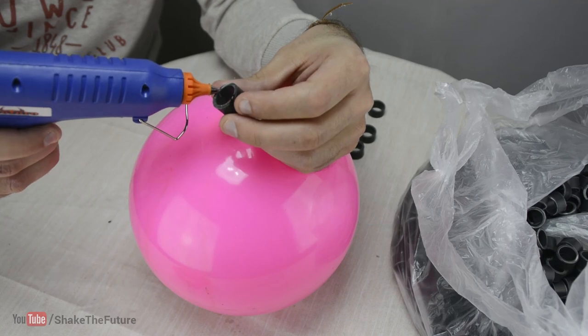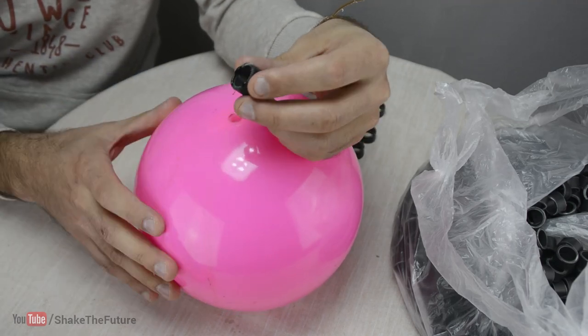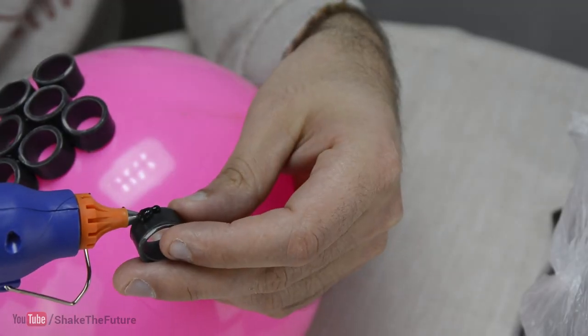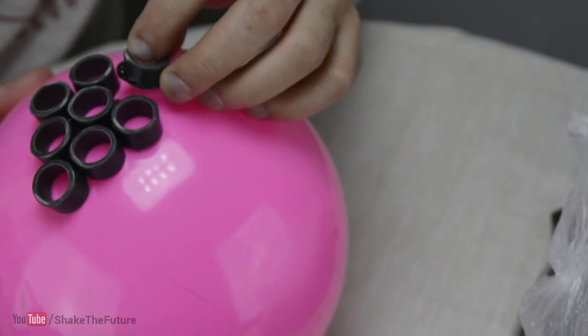I glued the first ring to the ball so the lamp shape wouldn't move while I work on it. I glued together the rest of the rings without gluing them to the ball.